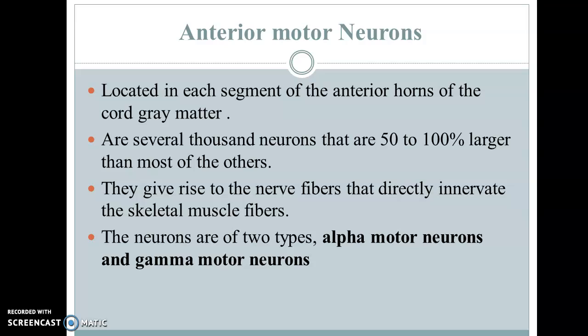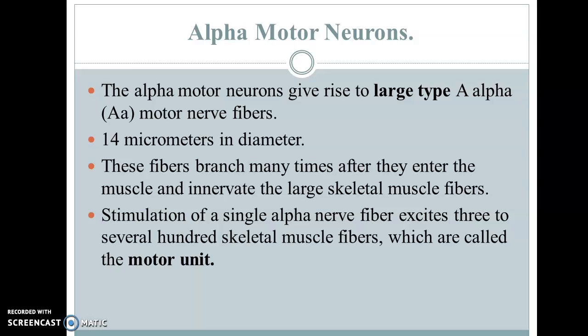Coming to the anterior motor neurons: as the name suggests, they are present in the anterior horns of the grey matter. They are very large in size and thousands in number, and they directly innervate skeletal muscle fibers. Depending on size they are divided into two types: alpha motor neurons and gamma motor neurons. The larger type — alpha motor neurons, or type A nerve fibers — are generally 14 micrometers in diameter. A single alpha nerve fiber, when stimulated, can excite around 3 to several hundred skeletal muscle fibers, and this group is termed a motor unit.